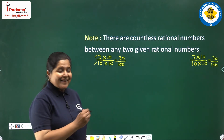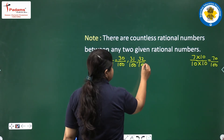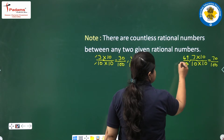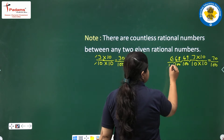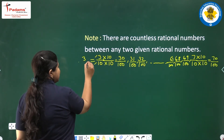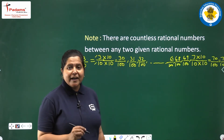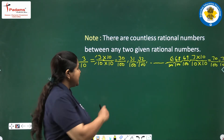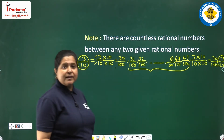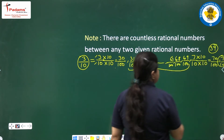Now between 30/100 and 70/100, we can write 31 upon 100, 32 upon 100, 33 upon 100, 34 upon 100, and so on, up to 69 upon 100, 68 upon 100, 67 upon 100. Originally 30/100 is the same as 3/10 and 70/100 is the same as 7/10. So instead of only 3 rational numbers, we are now finding many — if you count them, they come up to be 39 in number.